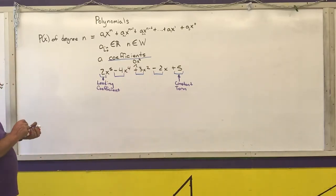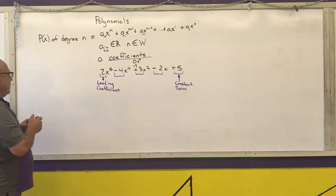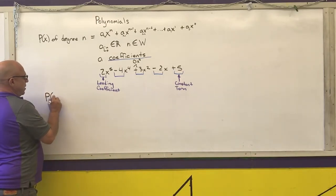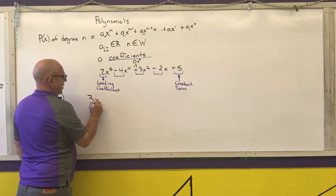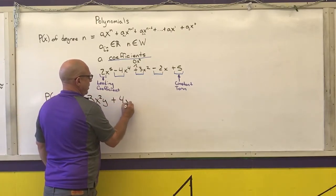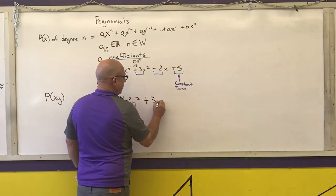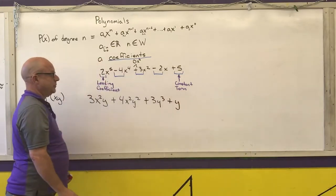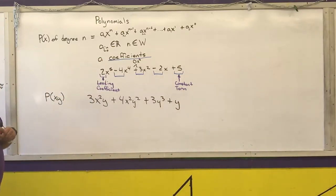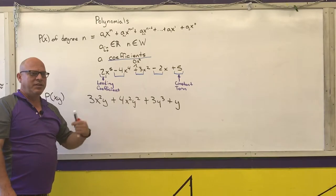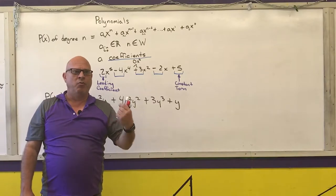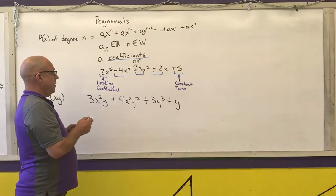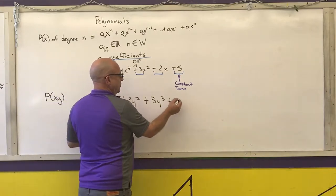It's important to identify the leading coefficient and constant term because they matter for future operations. Note the leading coefficient is not necessarily the first term listed — it's the coefficient of the highest degree term, which will be first only if written in standard form, which I recommend. I can also have polynomials of more than one variable. For example, a polynomial in X and Y: 3X squared·Y plus 4X squared·Y squared plus 3Y cubed plus Y.